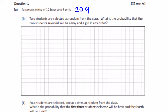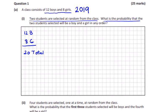2019 probability, first question on paper 2. A class consists of 12 boys and 8 girls, 12 boys, 8 girls, giving us a total of 20. Two students are selected at random from the class. What is the probability that the two students selected will be a boy and a girl in any order? So it can either be a boy followed by a girl or a girl followed by a boy, so you have to add these two probabilities.